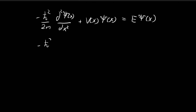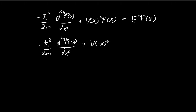I'm going to use this equation and substitute in -x. By substituting -x, we get: V(-x) · ξ(-x) on the left side, equal to E times ξ(-x).